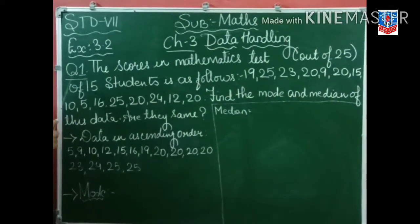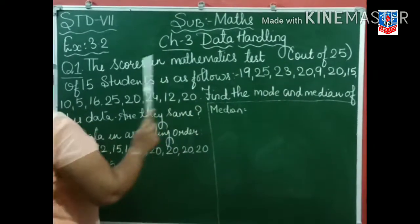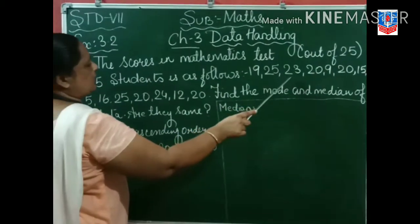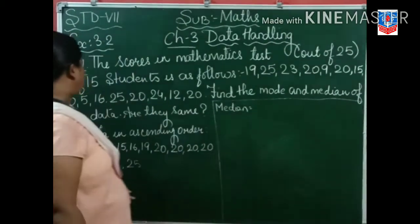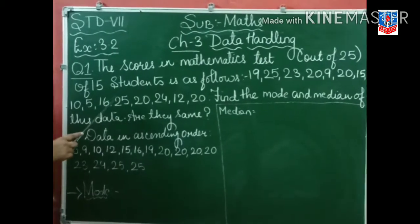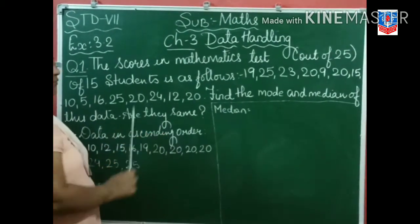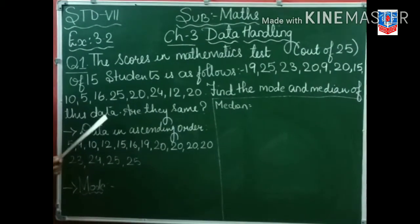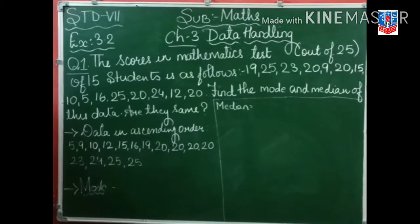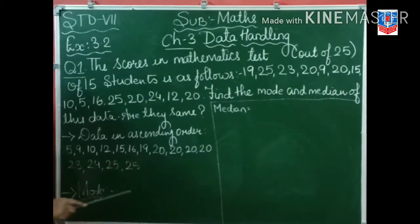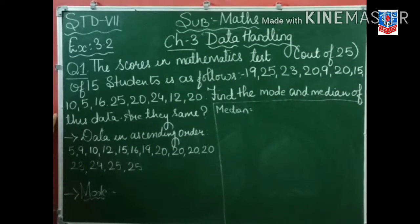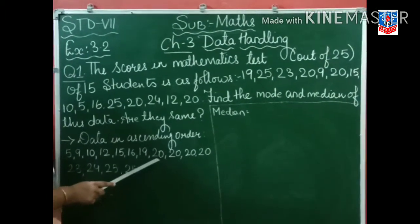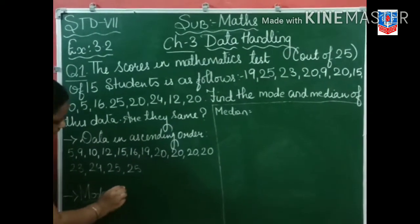Exercise 3.2, Question 1. The scores in a mathematics test of 15 students are as follows: 19, 25, 23, 20, 9, 20, 15, 10, 5, 16, 25, 20, 24, 12, and 20. You have to find the mode and median of this data and say whether they are the same. First, you will arrange this data in ascending order. Mode is the value which occurs most frequently. See here — 20 occurs most times. So our mode is 20.